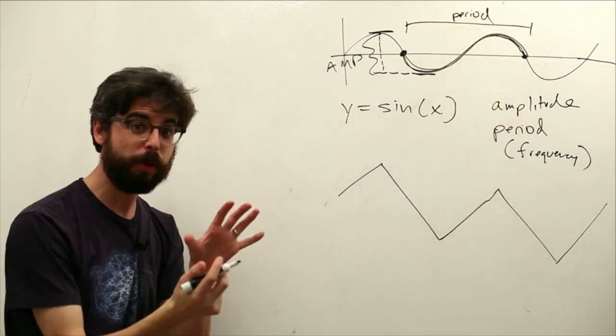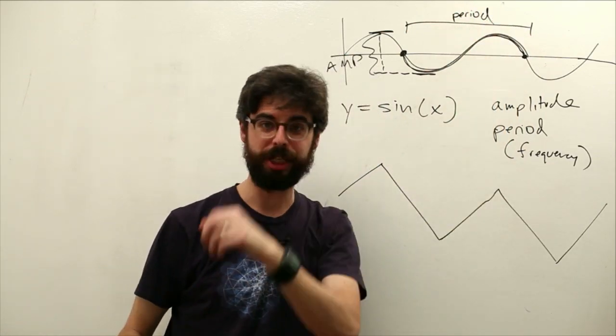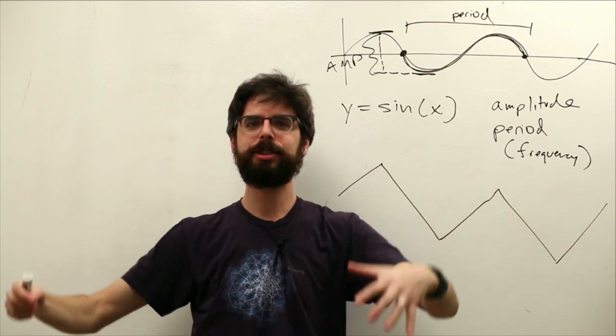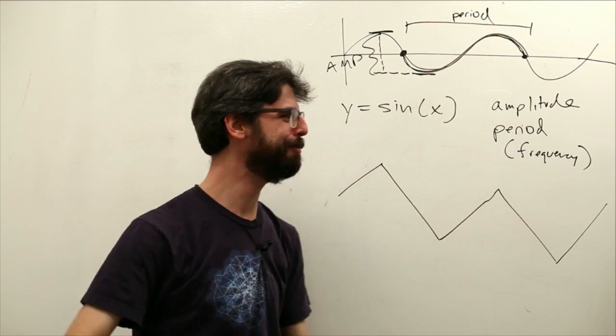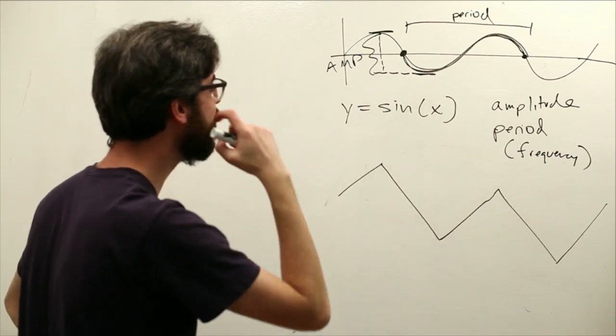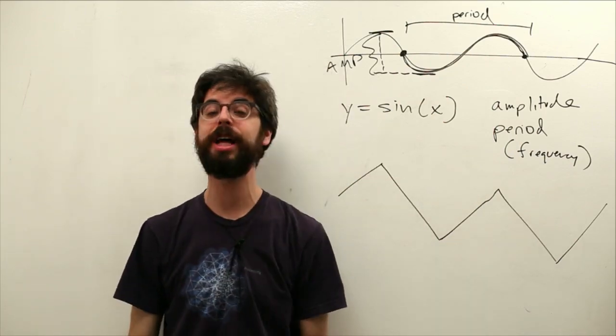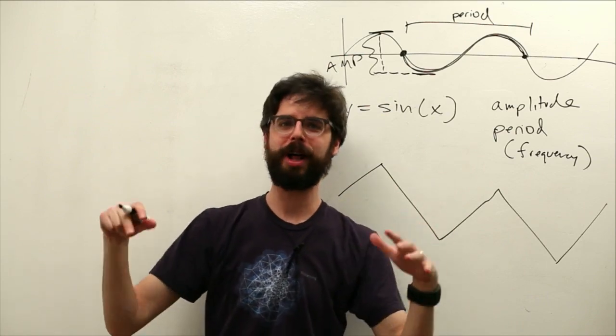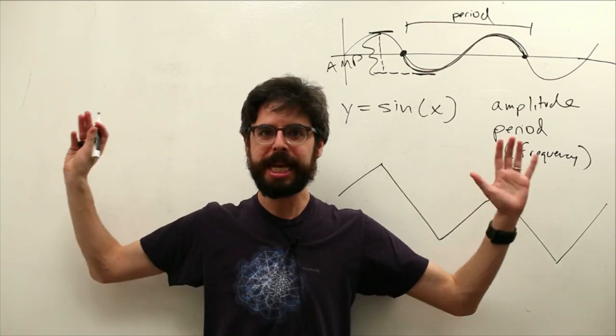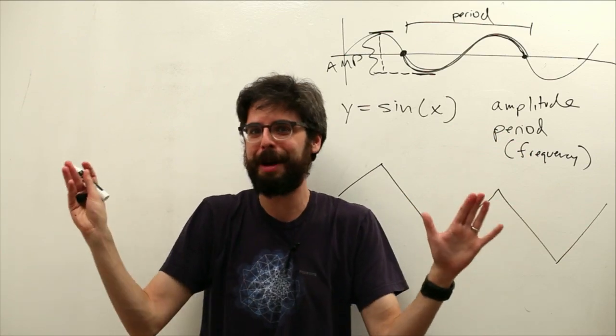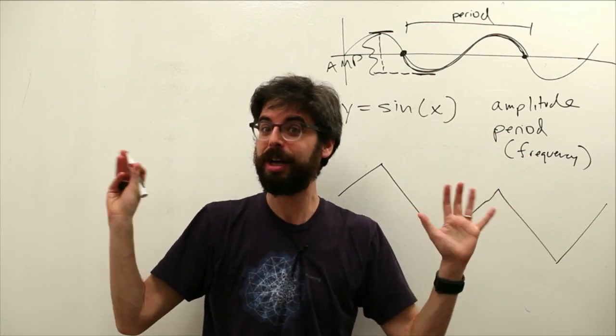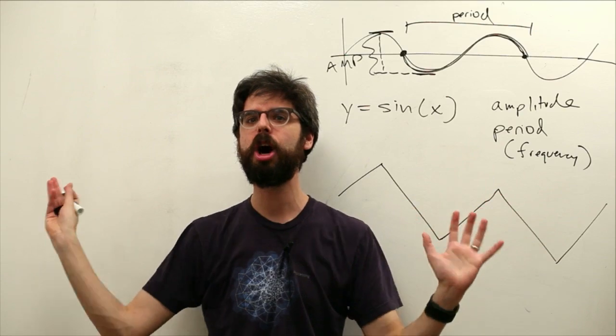So a smaller period is faster oscillations. A longer period is slower oscillations. Because I have no props or diagrams I'm just doing weird things with my body. So these are the things we want to control if we are modeling the butterfly's wings. Is it a big amplitude? Are those big flapping or small flapping? Are the flapping very fast? A low period or very slow? A big period.